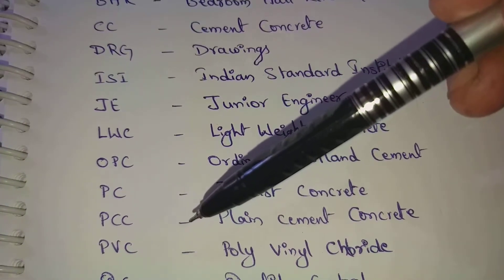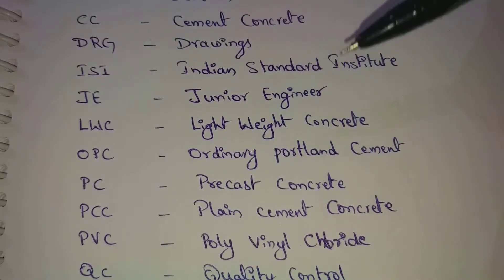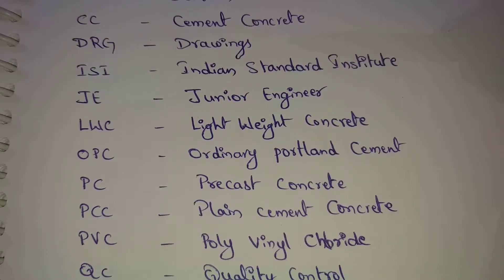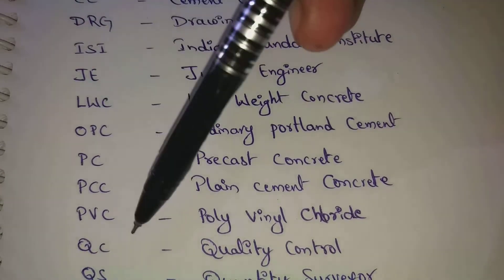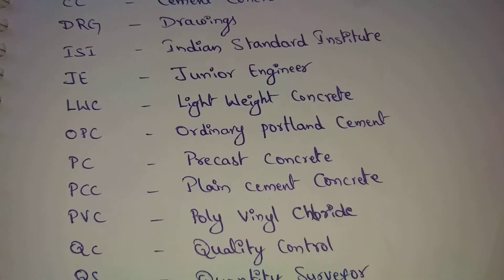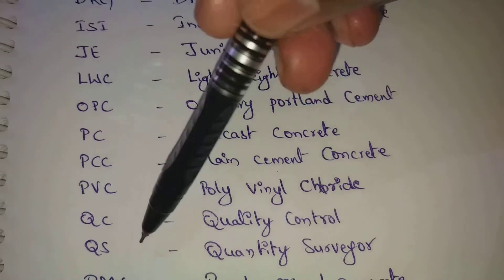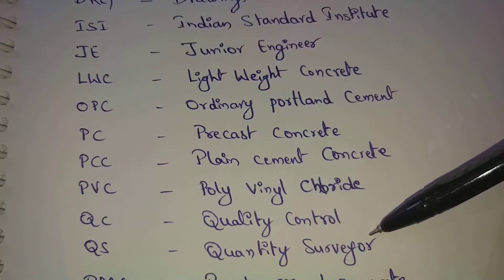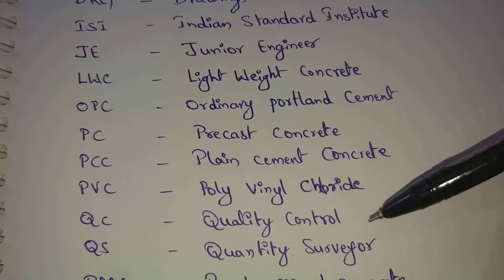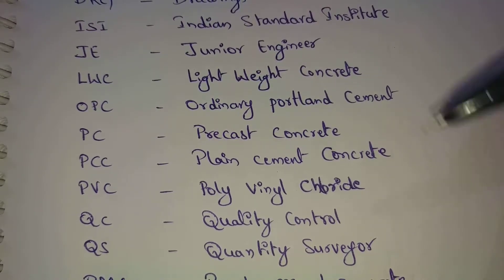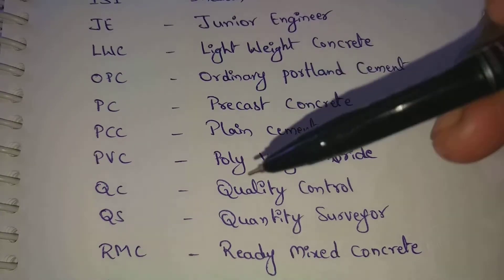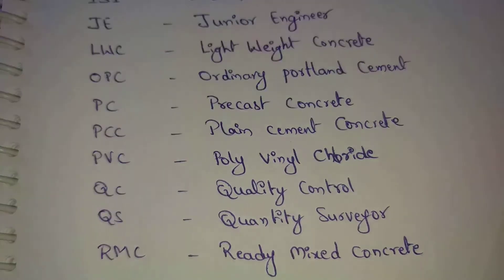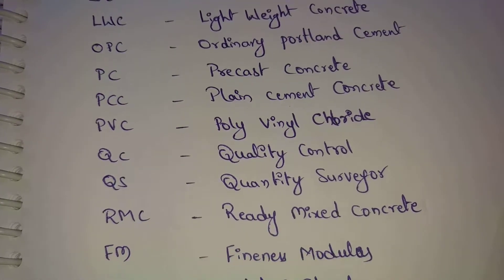Next, PVC — PVC means polyvinyl chloride. In general construction work, PVC pipes are regularly used. Next, QC — QC means quality control, which is one of the site engineer roles. Next, QS — QS means quantity surveyor, already discussed. Next, RMC — RMC means ready mixed concrete, which is widely used nowadays.